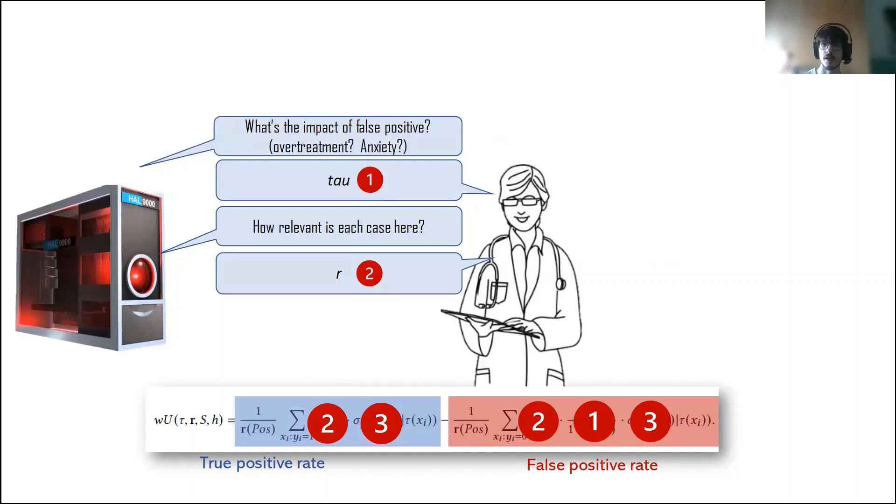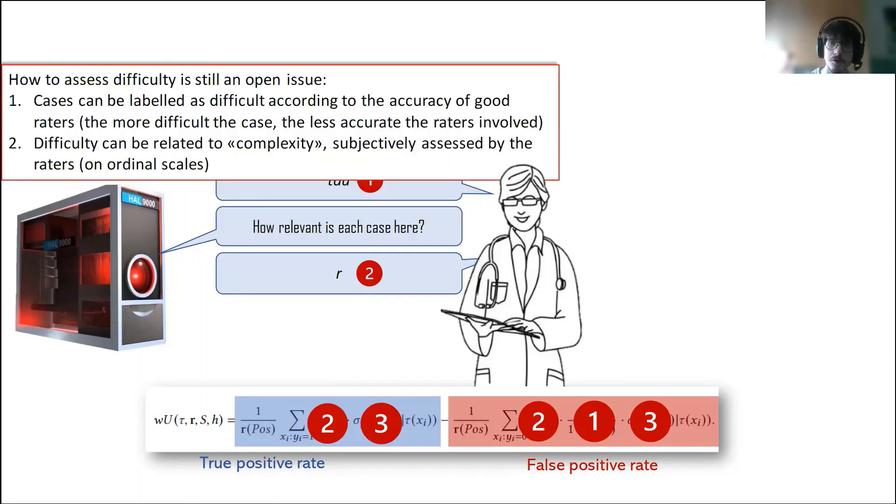The second element, in regard to understanding on which cases the support of the artificial intelligence system is most needed, we encode this information in the form of a relevance function, which is essentially a mapping from instances or cases to numbers between 0 and 1, where 1 means the maximum possible relevance and 0 means that an element is not relevant at all.